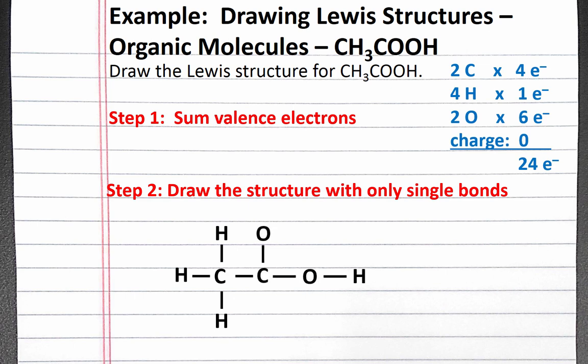which is an oxygen atom and an OH group bonded to a carbon. By creating these seven single bonds, we've used up 14 electrons, so we have 10 electrons left.